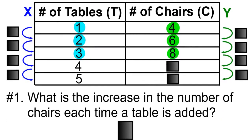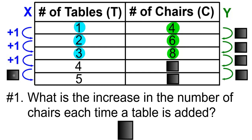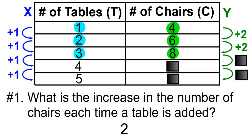Question number one: What is the increase in the number of chairs each time a table is added? We're adding one table each time, and every time we add a table, we're adding two chairs each time. So the number of chairs added each time a table is added is going to be plus two.